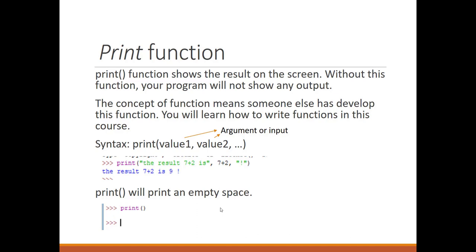The print function can have multiple inputs or arguments. The syntax is: print(value1, value2, ...) — basically there is no restriction on the number of arguments you can put inside print. For example: print("The result of 7 plus 2 is", 7+2, "!") — this prints a string, then calculates 7+2, then another string with an exclamation mark. The result is: 'The result of 7 plus 2 is 9 !'. If you put no value inside print, it will just print an empty line.